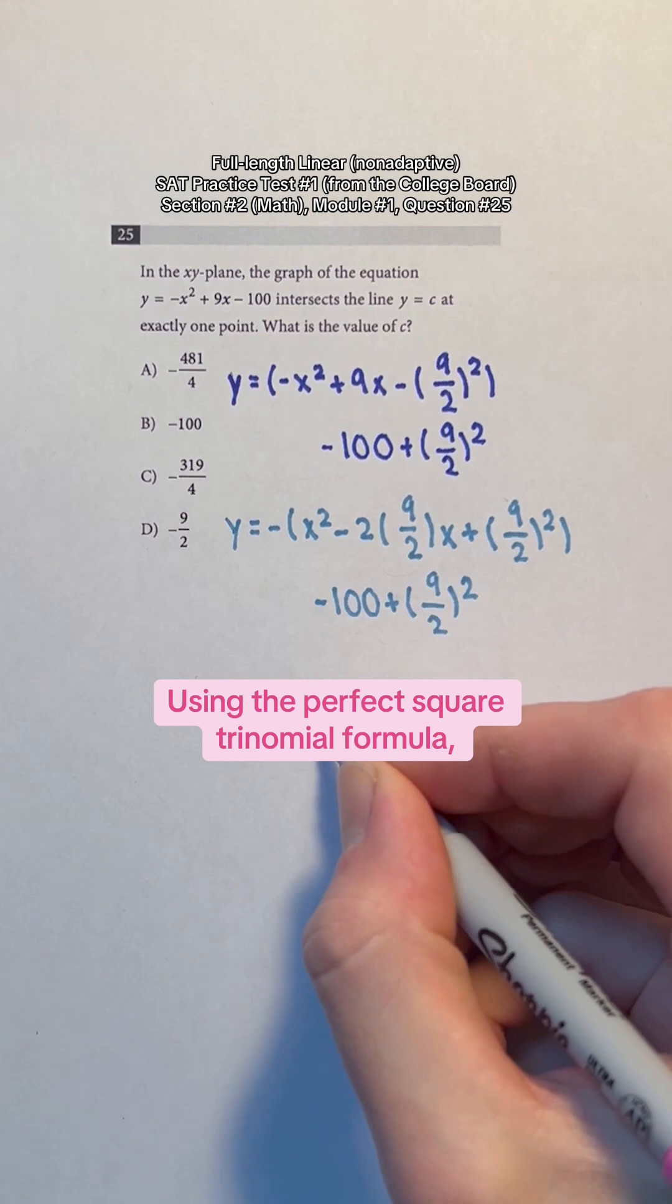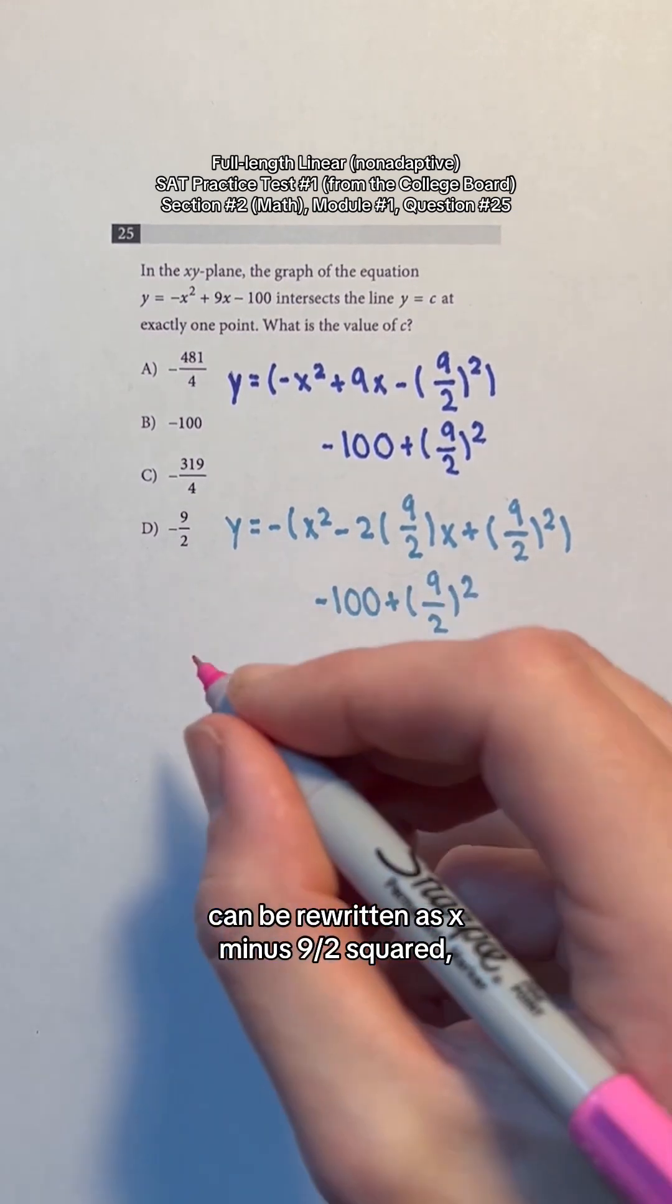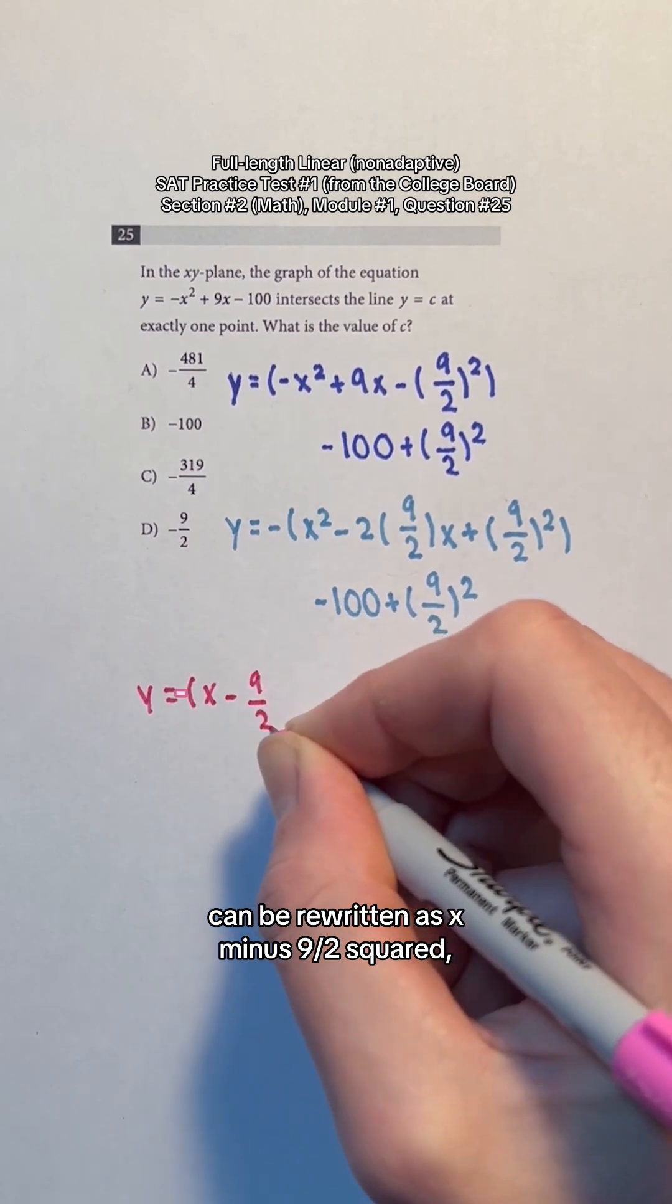Using the perfect square trinomial formula, x squared minus 2 times 9 halves x plus 9 halves squared can be rewritten as x minus 9 halves squared.